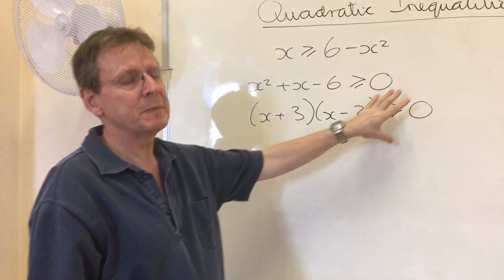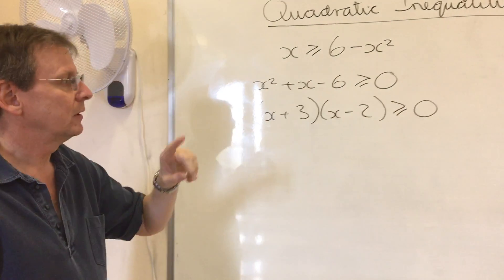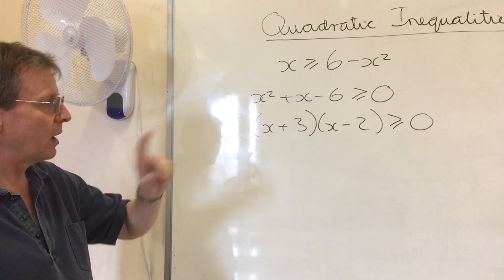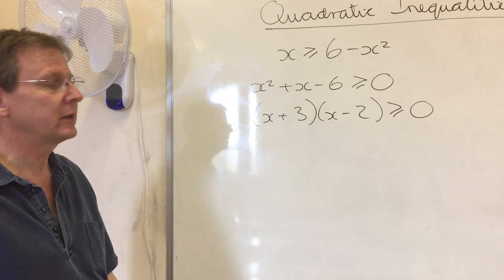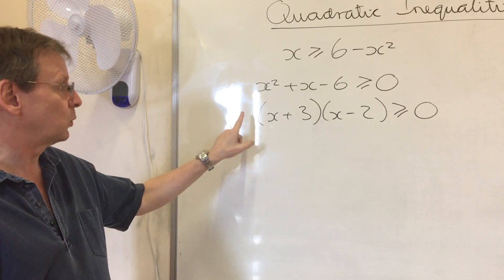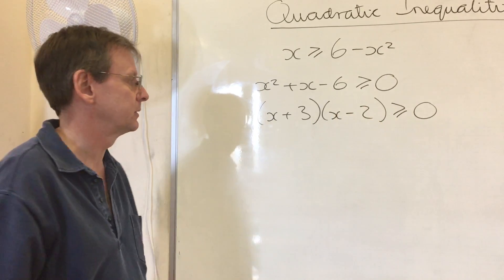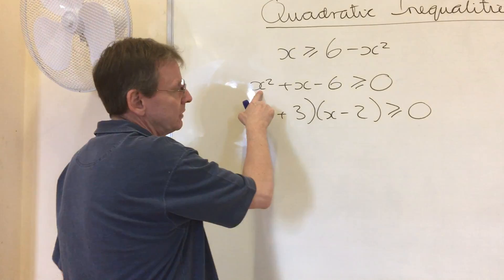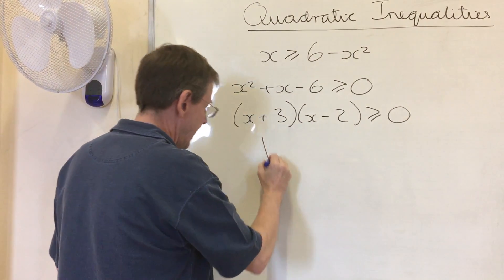But, coming back to the quadratic inequality, there's lots of ways to do it, but my preferred method is the following. I'm going to sketch the graph of y equals x squared plus x minus 6, y equals (x plus 3)(x minus 2), in other words. Because it is a positive number of x squared, it will be a happy graph.